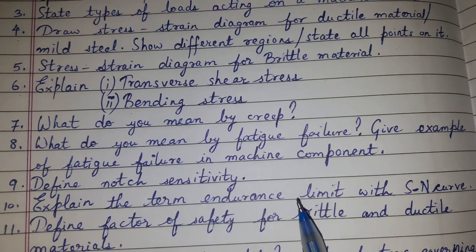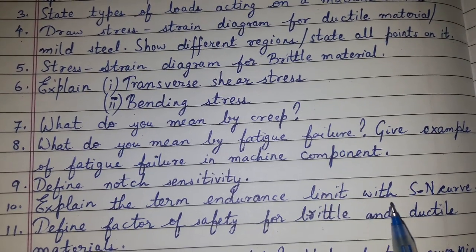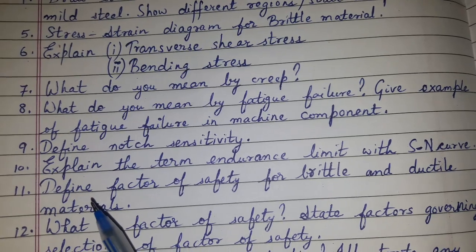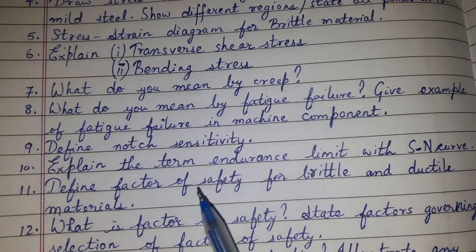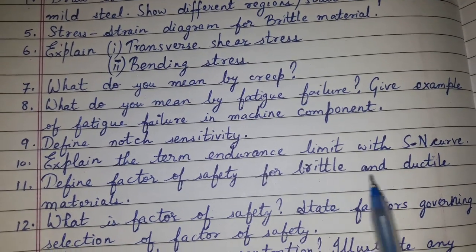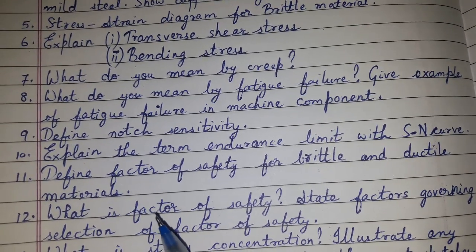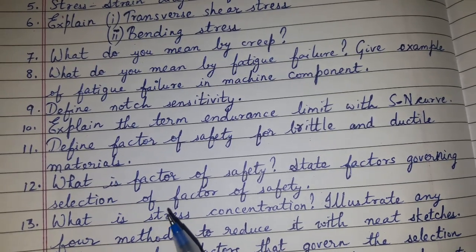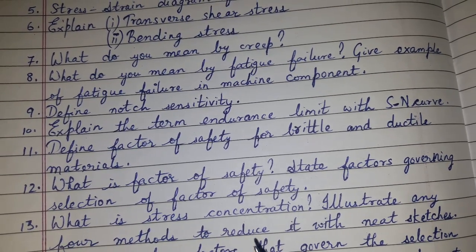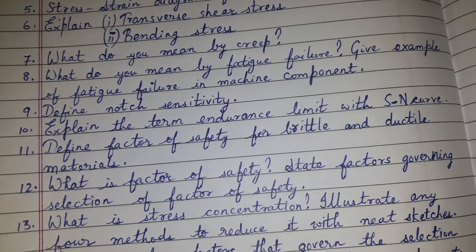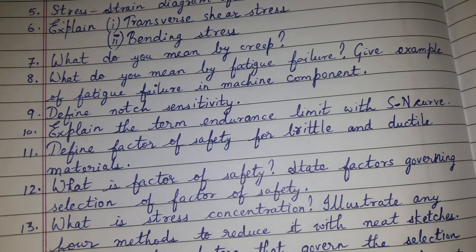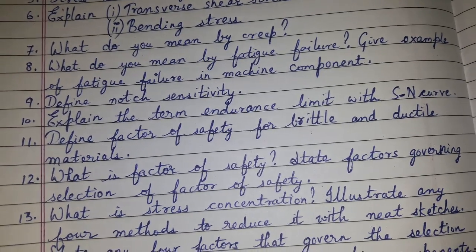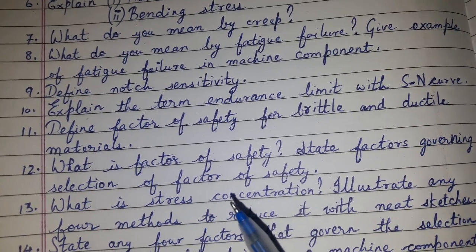Question number nine: define notch sensitivity. Question number ten: explain the term endurance limit with the S-N curve. Question number eleven: define factor of safety for brittle and ductile materials. Question number twelve: what is factor of safety? State the factors governing the selection of factor of safety.